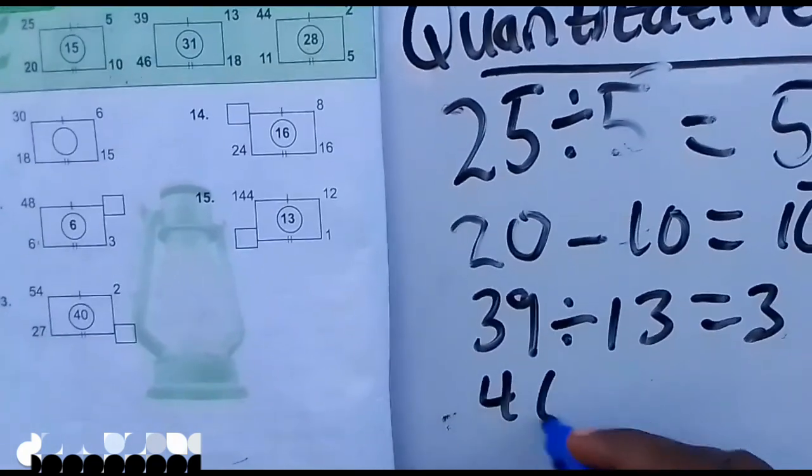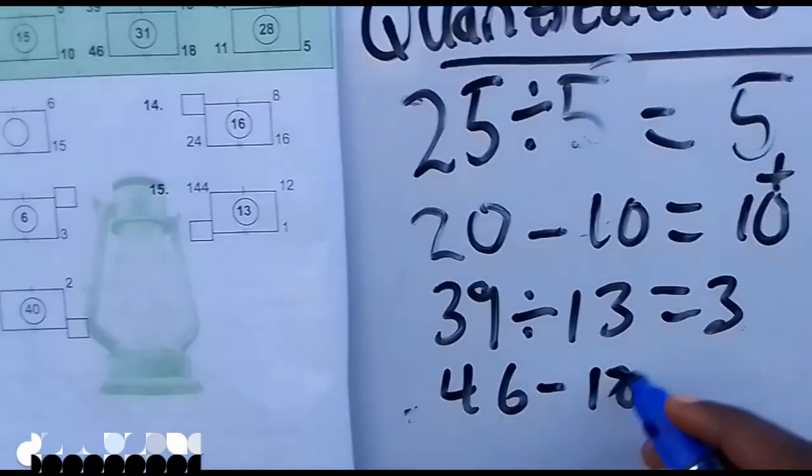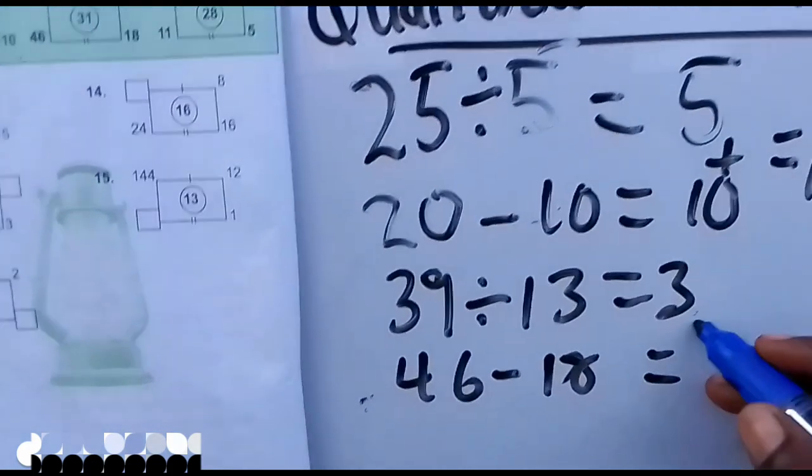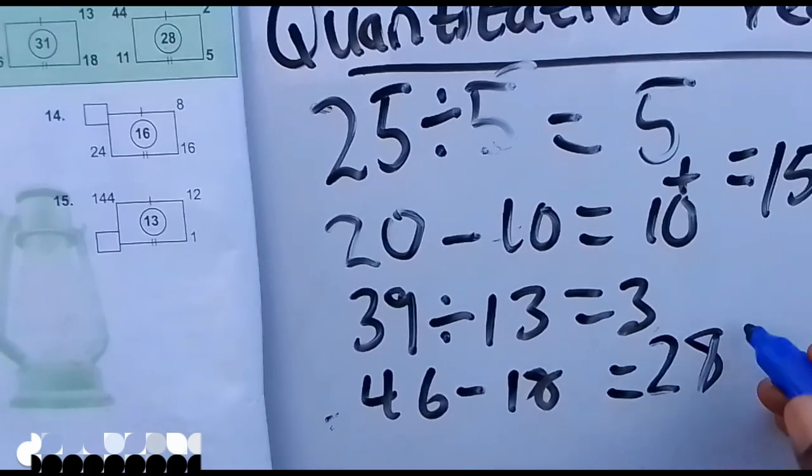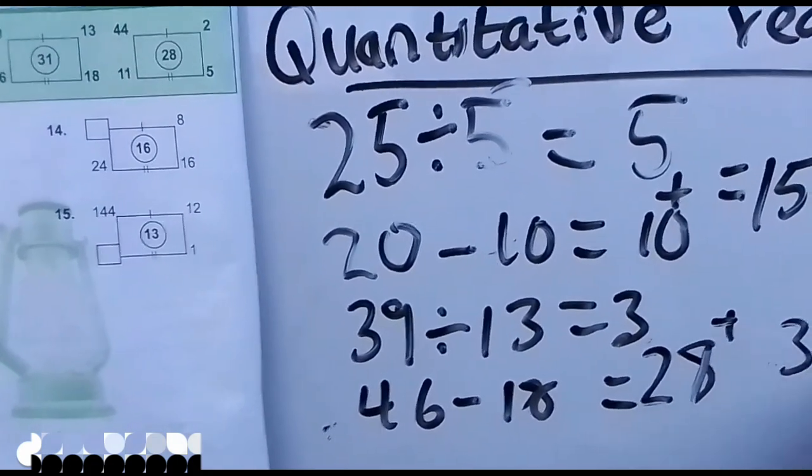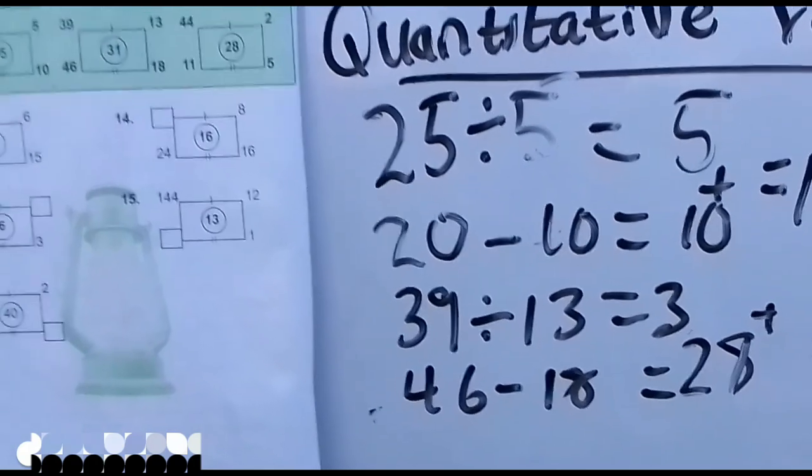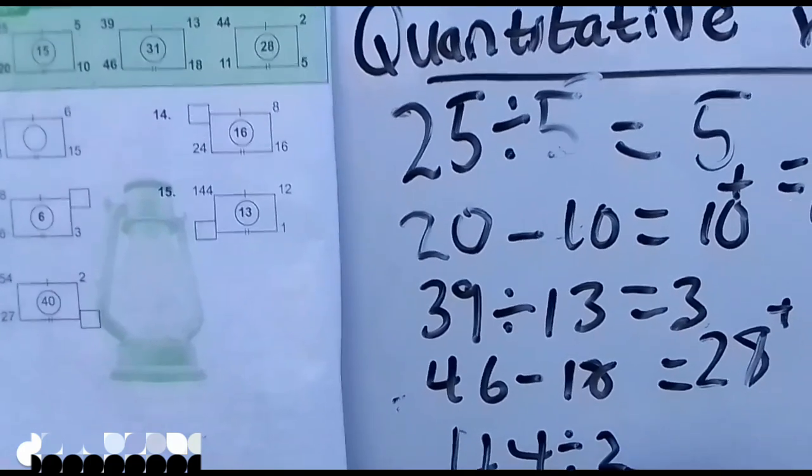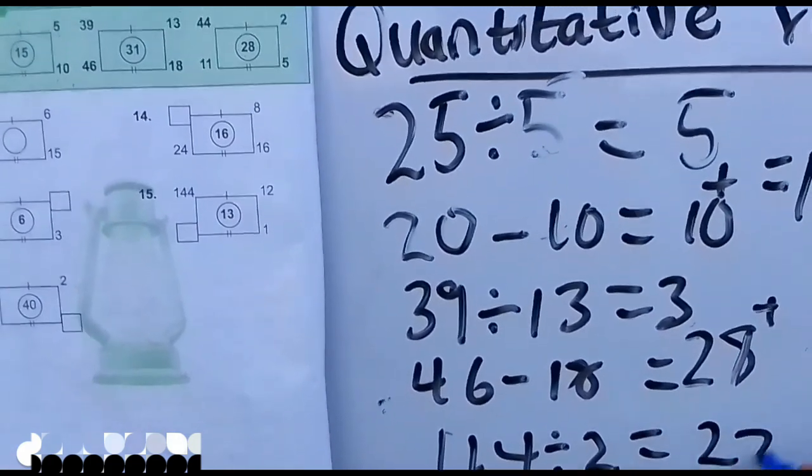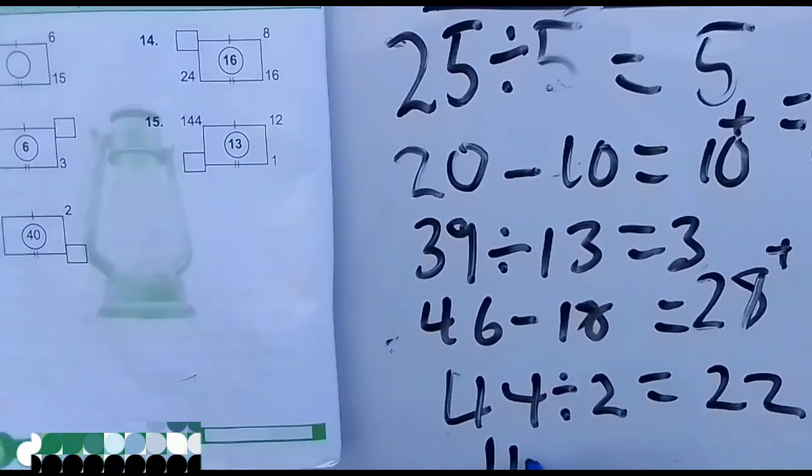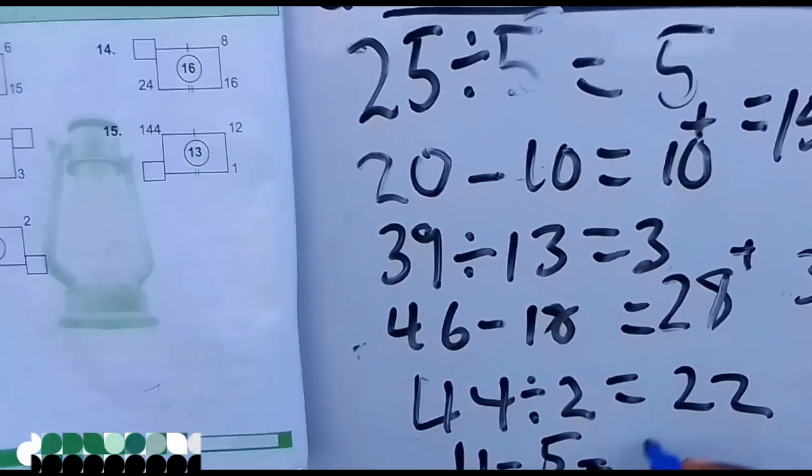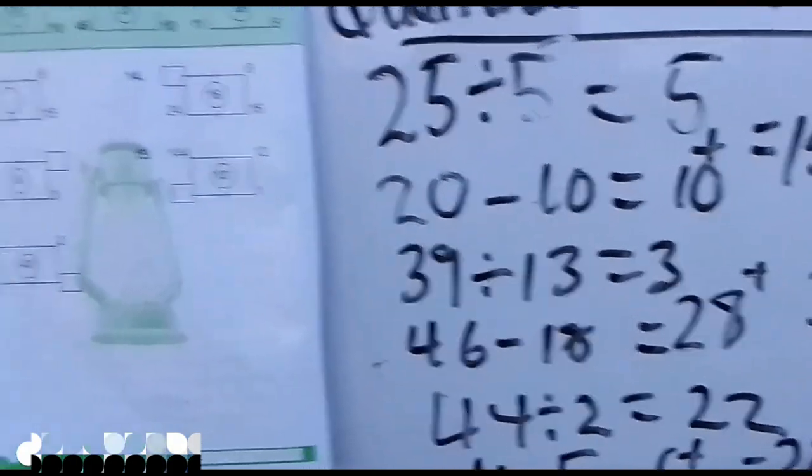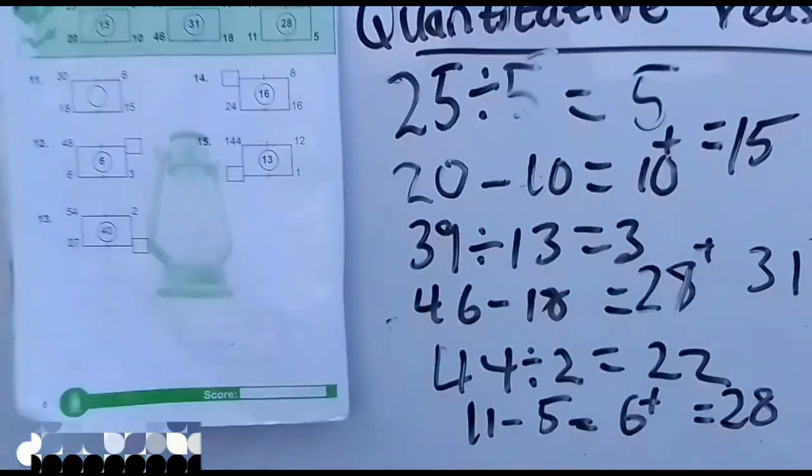The last one: 44 divided by 2 we have 22, and 11 minus 5 we have 6, we have 28. That's all we have for that problem. As you can see it is very easy but if you don't know it you might be thinking about many things.